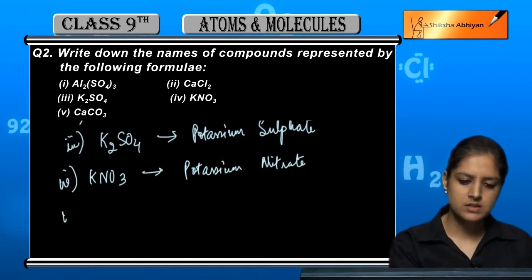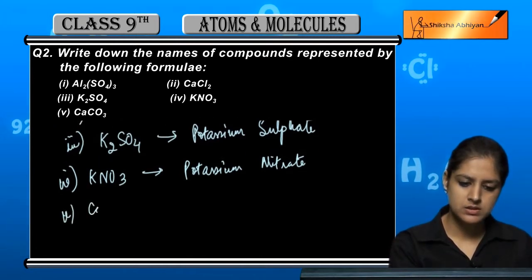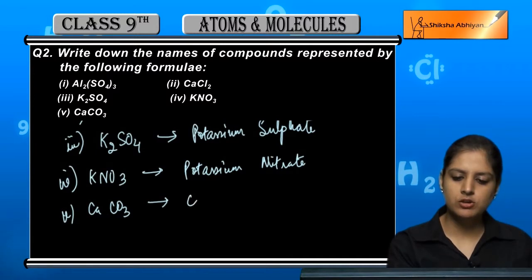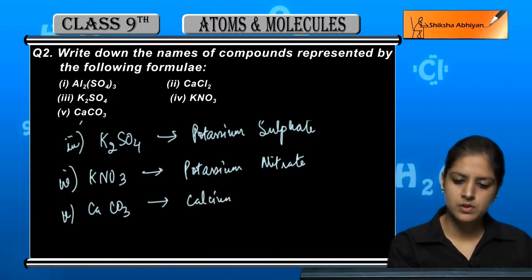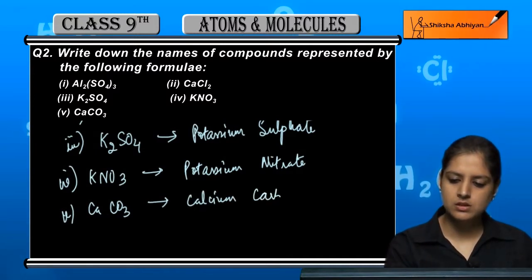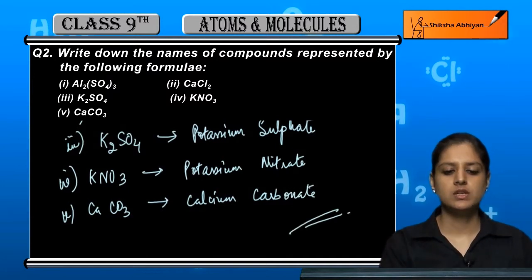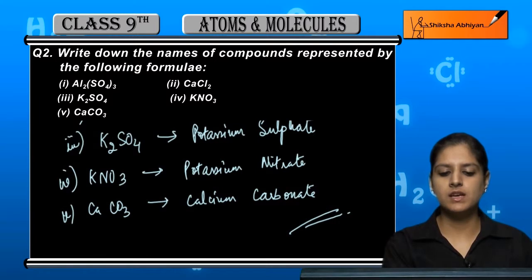Last compound is CaCO3. Ca is calcium and CO3 is carbonate. So these are all the formulas and compound names for the given ones.